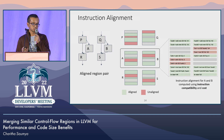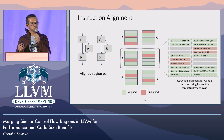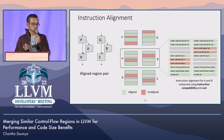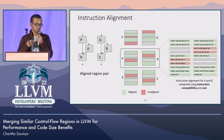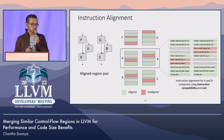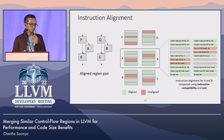In the alignment computation, we consider two things for two instructions to be aligned: they need to match and be compatible, and we also consider the instruction cost. Costly instructions have higher priority to be aligned together than lower-cost instructions. We solve this using the Smith-Waterman algorithm or any sequence alignment algorithm.